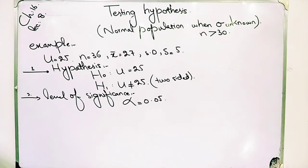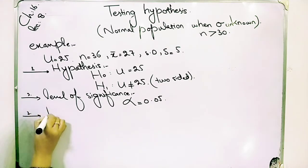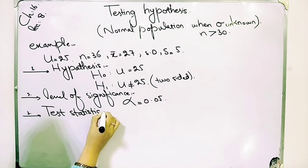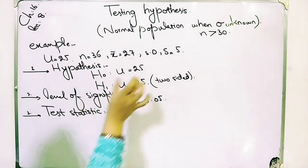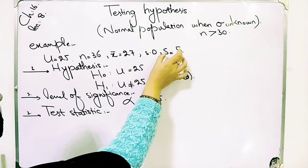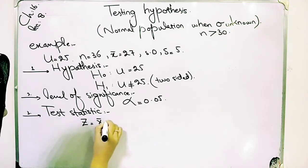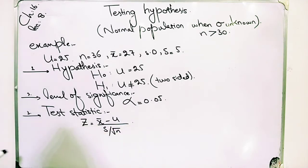Step 3: Test statistics. You have to clarify and verify which formula to use. Since sigma is unknown, we have the sample standard deviation s. The formula will be z = (x̄ − μ) / (s / √n), using s instead of sigma because sigma is unknown.